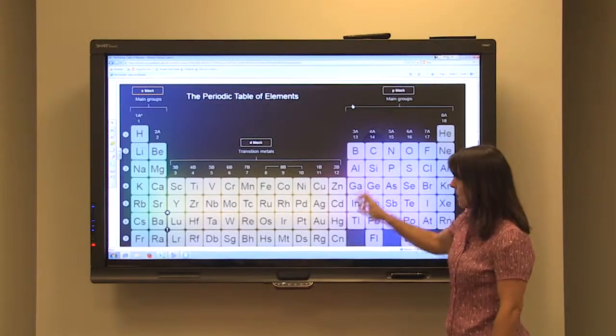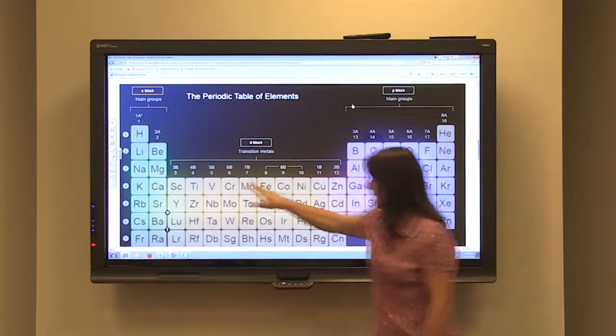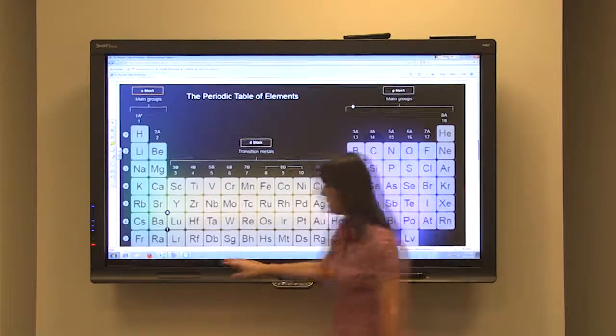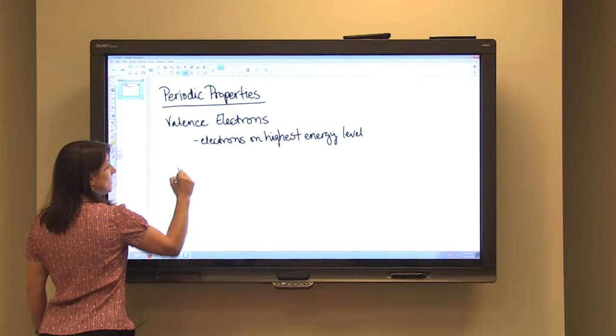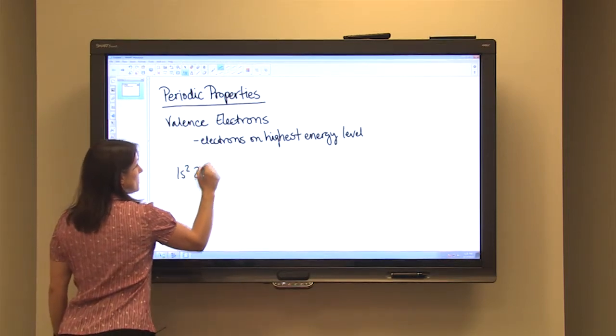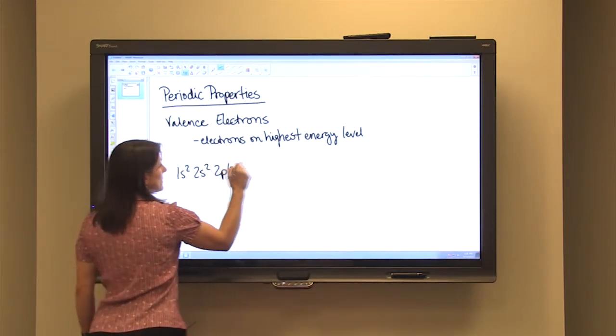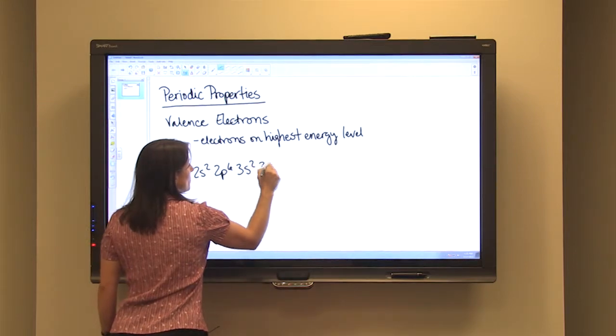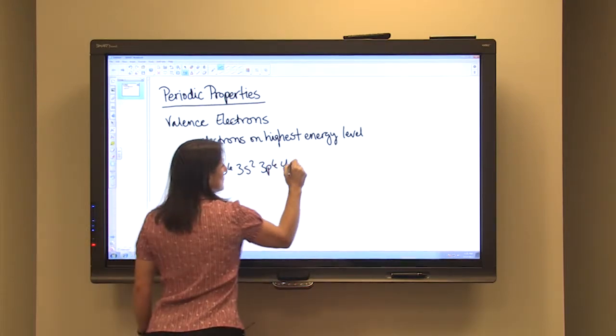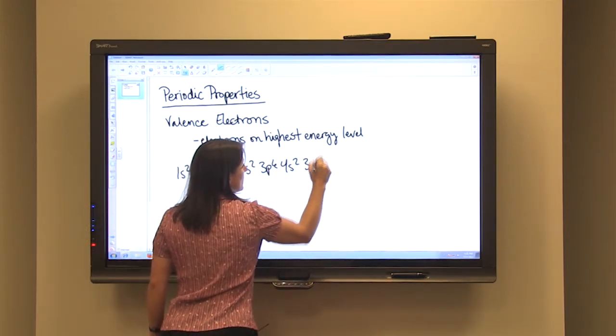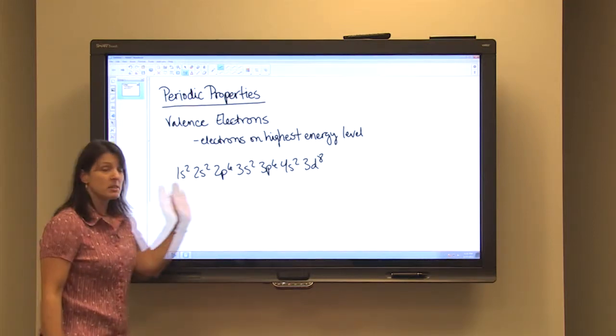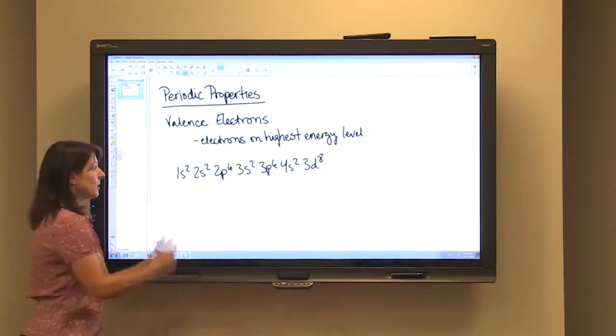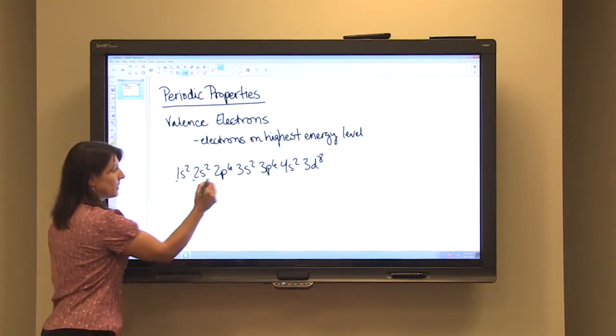So for nickel, it ends in 3D8. That would be the electron configuration for nickel. We need to find the highest energy level.